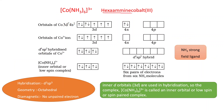Now let us look at some specific examples. The first is hexamminecobalt(III), [Co(NH₃)₆]³⁺. The atomic number of cobalt is 27, so its electronic configuration in the neutral atom is 3d⁷ 4s². In this complex, the oxidation state of cobalt is +3.